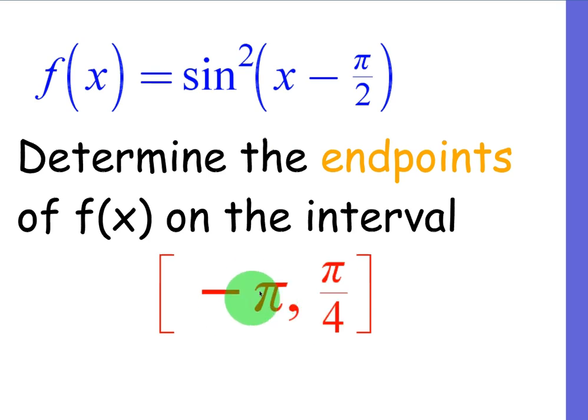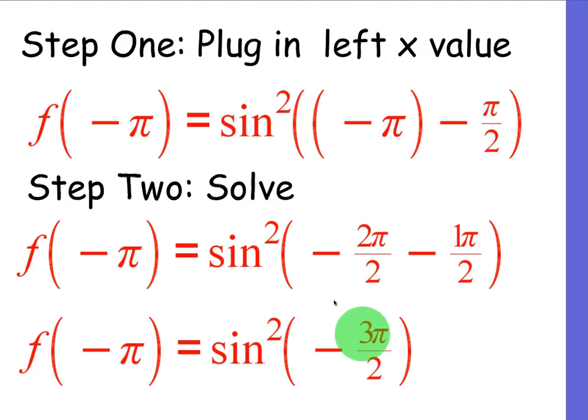So for our first step, we're just going to plug in negative pi. Step one, plug in the left x value. We're going to figure out whatever that y value is. So step two is going to be to solve. Now negative pi is the same as negative 2 pi over 2. That way we can combine it with the minus pi over 2. So it's ultimately negative 3 pi over 2 inside of here.